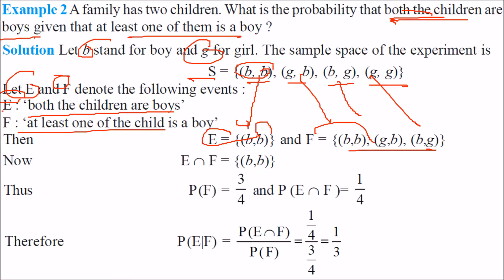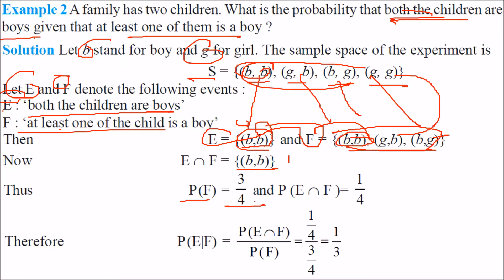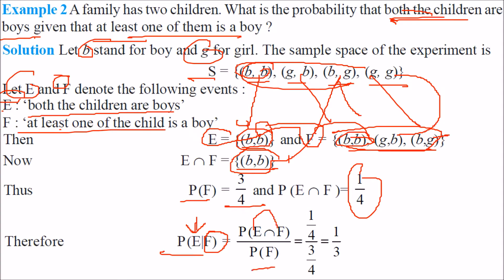E contains only {BB}. F contains {BB, GB, BG} — three elements. E∩F is just {BB}, so P(E∩F) = 1/4. P(F) = 3/4. Therefore P(E|F) = P(E∩F) / P(F) = (1/4) / (3/4) = 1/3.